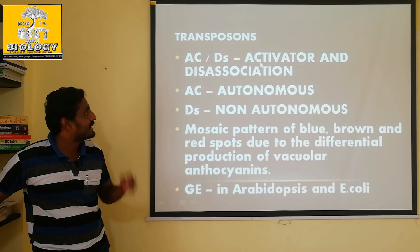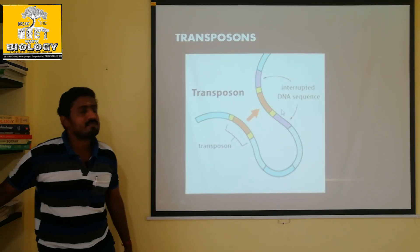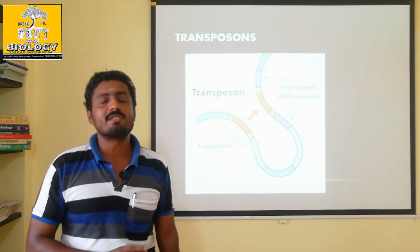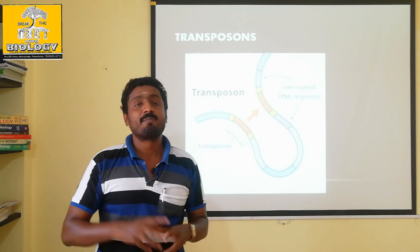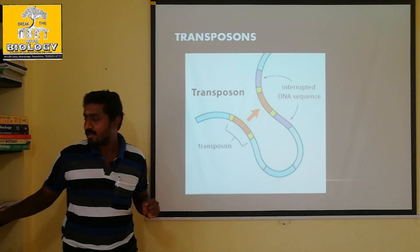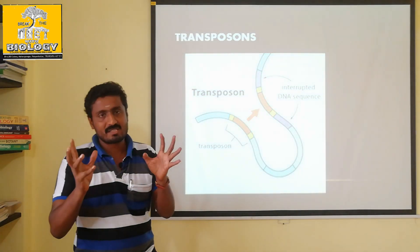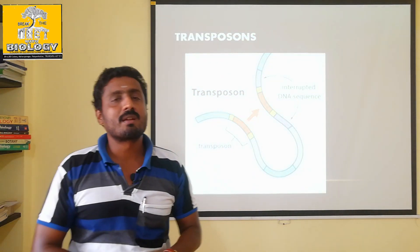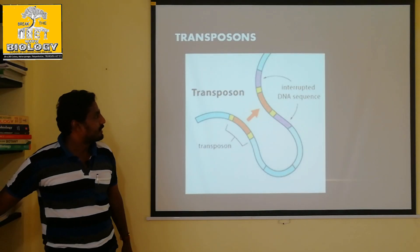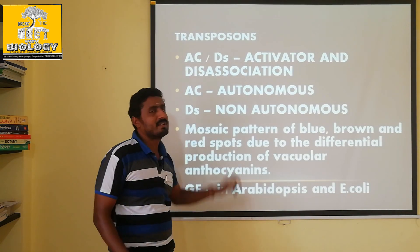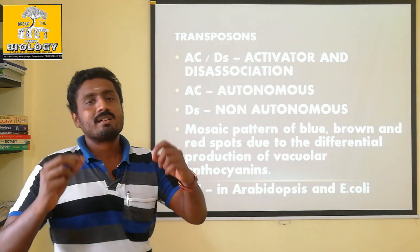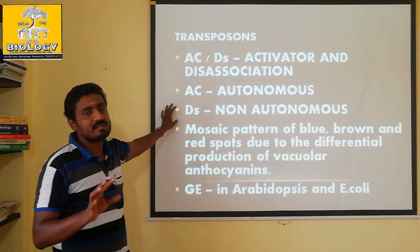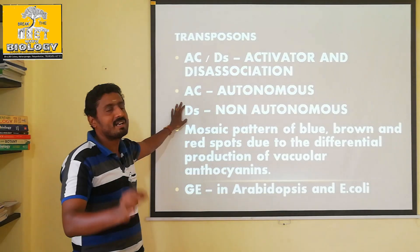The AC (Activator) is autonomous — it does not depend on anybody else. The DS (Dissociation) factor is not autonomous; it is dependent on the activator. The dissociation factor requires proteins and is mainly dependent on the activator to carry out its function of cutting and ligating into the other DNA segment.